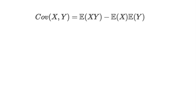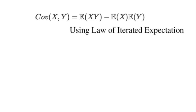Now we can write by law of iterated expectations, expected value of XY is equal to expected value of expected value of XY given Y.